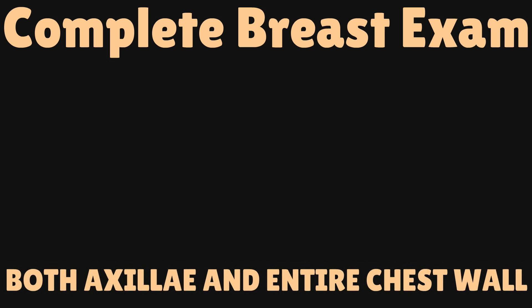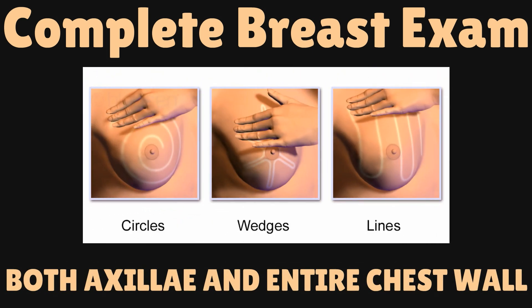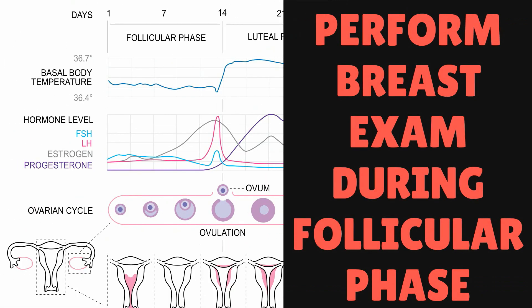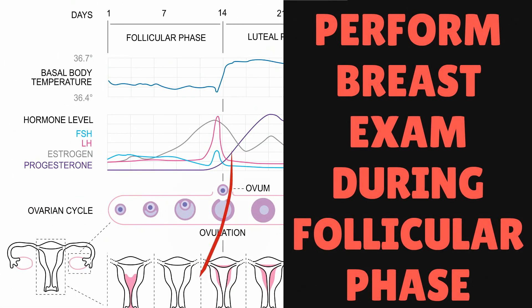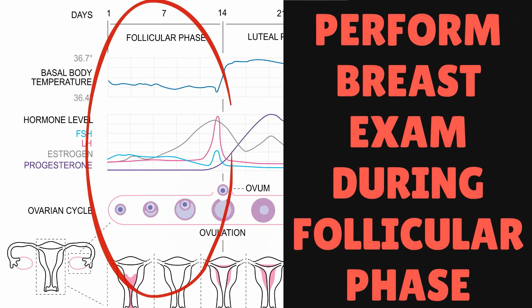A complete breast examination should evaluate both breasts in a systematic fashion, both axilla and the entire chest wall. Various techniques have been described for the palpation of breast tissue including circles, wedges, and line patterns of examination. The best time to perform a breast examination is ideally in the follicular phase of the menstrual cycle.